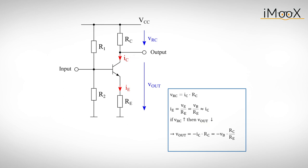So we can write Vout is minus IC times RC. Or, if we insert the formula above, we get Vout is minus VB times RC divided by RE. We can also define the gain of the circuit very easily. By dividing the output voltage by the input voltage, we get the gain of minus RC divided by RE. Neat, isn't it?